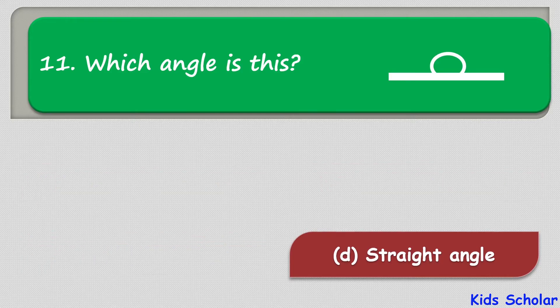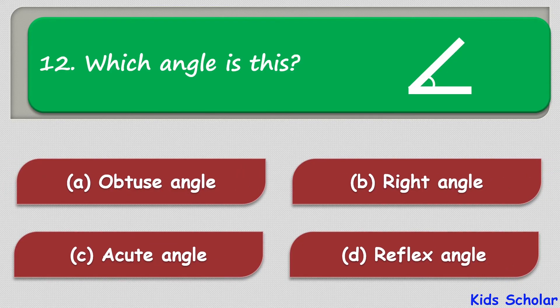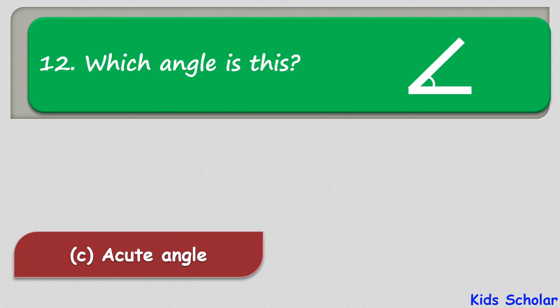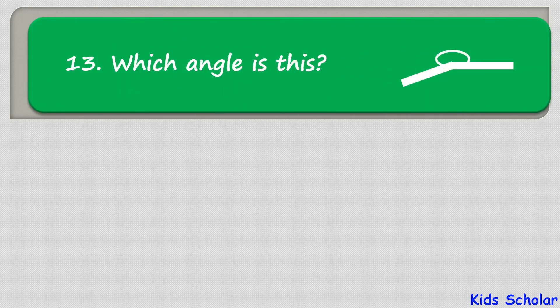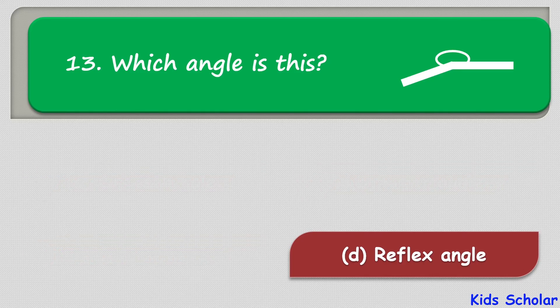The next question is: which angle is this? The options are obtuse angle, right angle, acute angle, and reflex angle. The correct answer is acute angle. The final question shows another picture with the same options, and the correct answer is reflex angle.